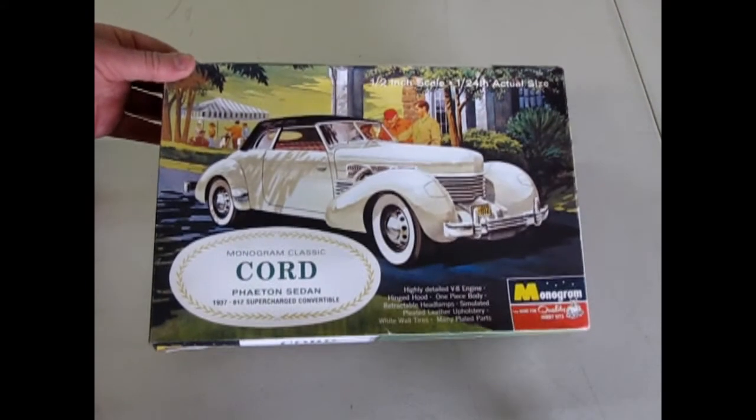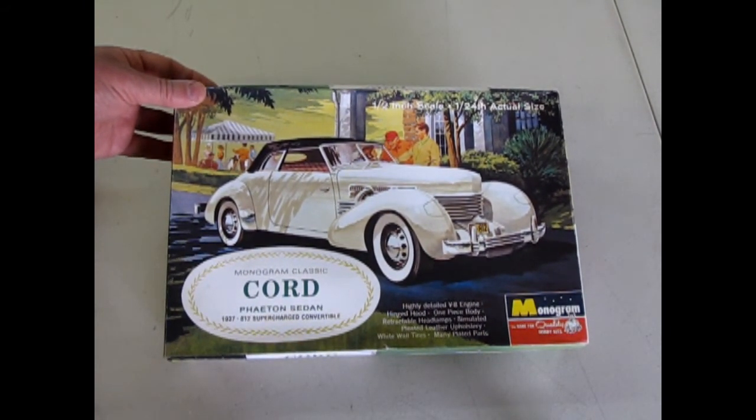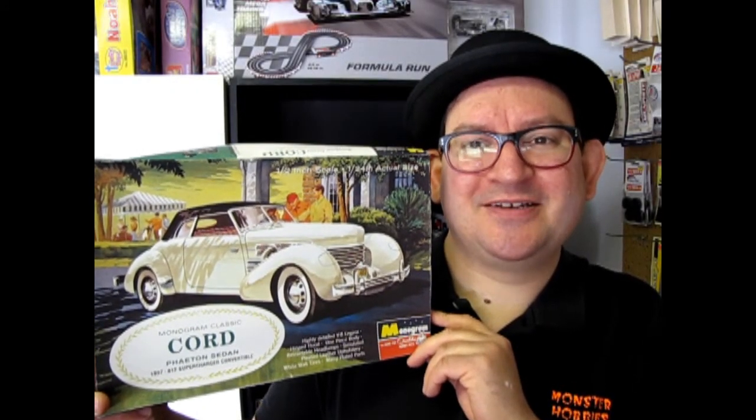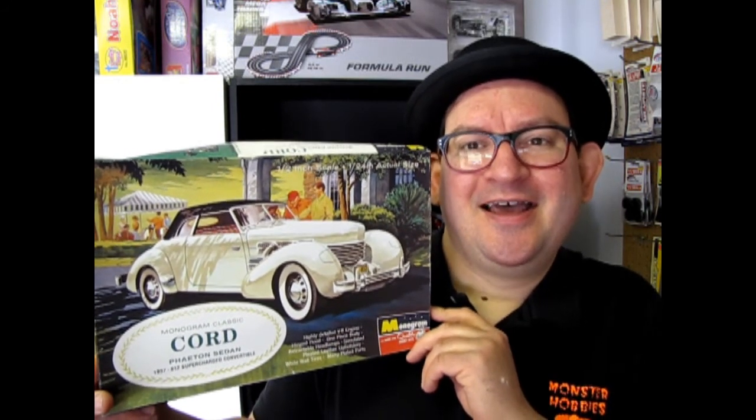And that brings us to the end of our examination of the Cord 812 supercharged convertible from 1937. I hope you liked that episode of what's in the box where we got to see the 1937 Cord. Quite an amazing kit isn't it? And if you want to see the rest of our cars in this series make sure you click here and here and right down here. And don't forget to like and subscribe to us right over here so we can keep that old gasoline running and keep the videos coming. And until next time we'll see you later.